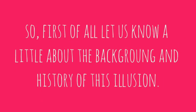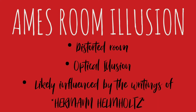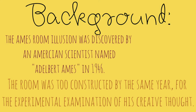Let us know a little about the background and history of this illusion. The Ames Room Illusion is a distorted room that works like an optical illusion, likely influenced by the writings of Hermann Helmholtz. The Ames Room Illusion was discovered by an American scientist named Adelbert Ames in 1946. The room was also constructed by him for the experimental examination of his creative thought.